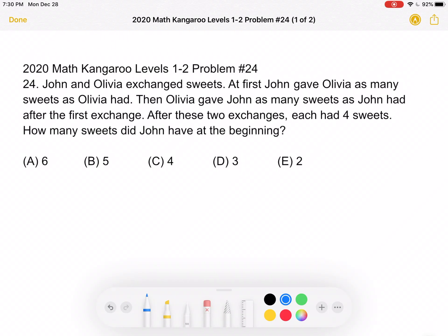This is the 2020 Math Kangaroo levels 1-2 problem number 24. John and Olivia exchanged sweets. At first, John gave Olivia as many sweets as Olivia had. Then Olivia gave John as many sweets as John had after the first exchange. After these two exchanges, each had four sweets. How many sweets did John have at the beginning?